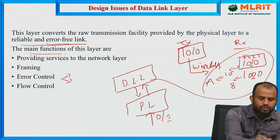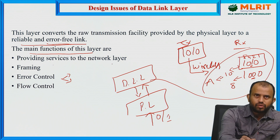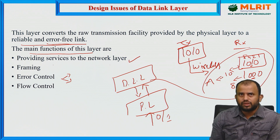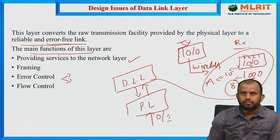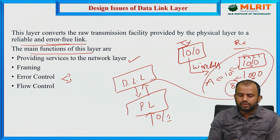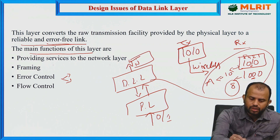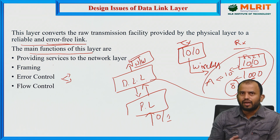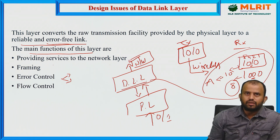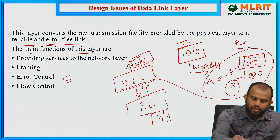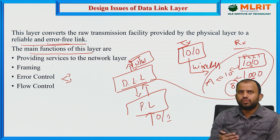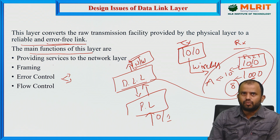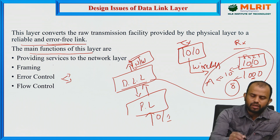The main function of the data link layer is to provide services to the network layer. Once the information is transmitted from the data link layer to the network layer, it must be error-free. If any error occurs in the source section or in the transmission section, the data link layer is able to detect and correct those errors. There should be no error occurring in the network layer — all error handling is done within the data link layer.